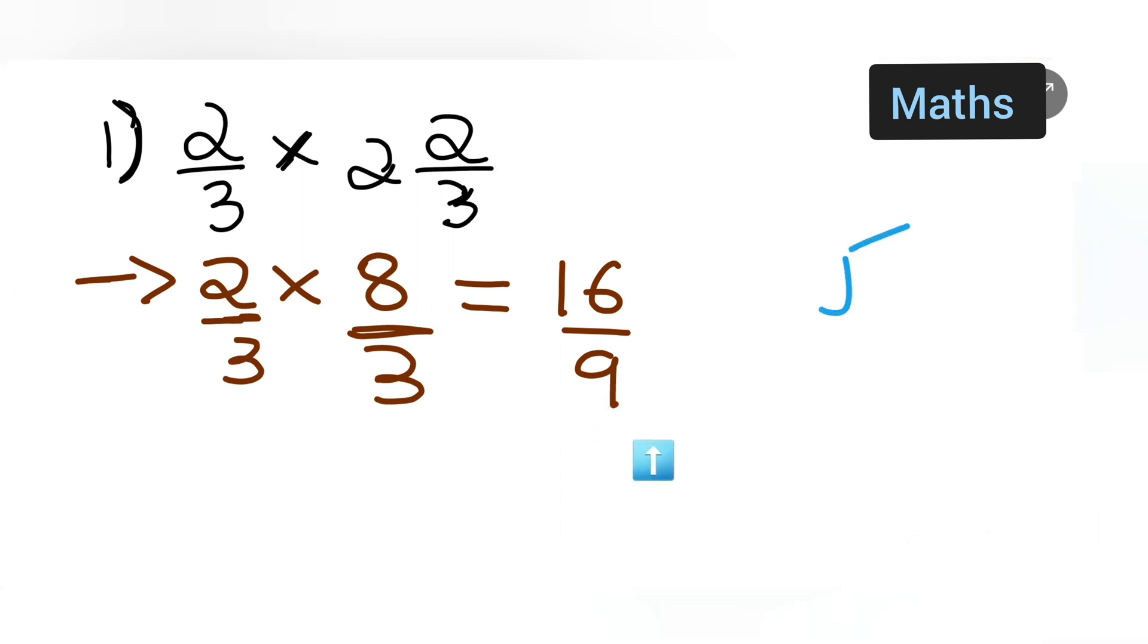Then divide and see what answer you are going to get. This is your 9 and this will be your 16. This is your 16. Basically, 9 ones are 9. 16 minus 9 is going to give you 7. This is your quotient, this is your dividend, and this is your remainder.